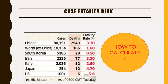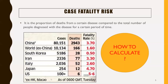Case fatality risk is the proportion of deaths from a certain disease compared to the total number of people diagnosed with that disease for a certain period of time. For example, in China, deaths were 2,943 and total diagnosed cases were 80,151. So 2,943 divided by 80,000 comes to around 3.7% — that is the case fatality risk in percentage.